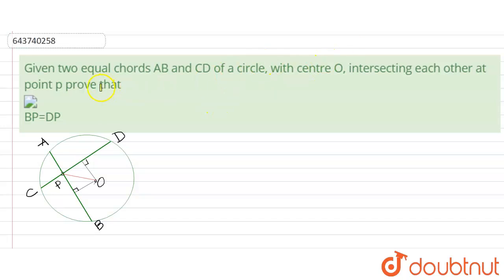Hello students. In this problem, we have given a figure in which two equal chords AB and CD of a circle with center O intersect each other at point P. Then we have to prove that BP is equal to DP.